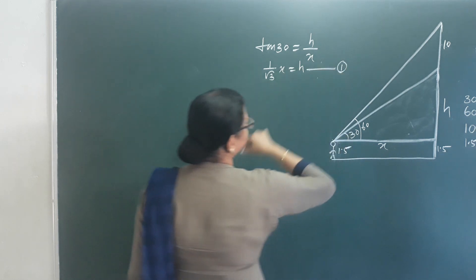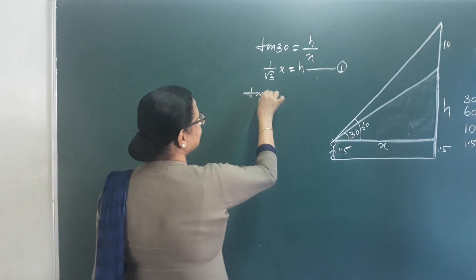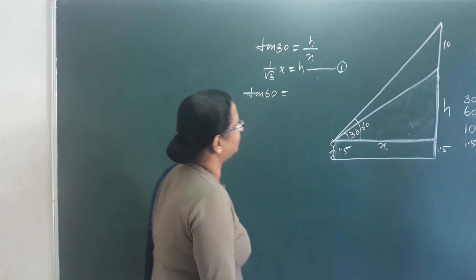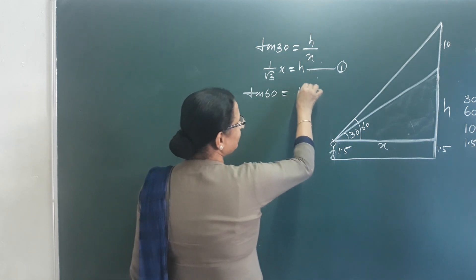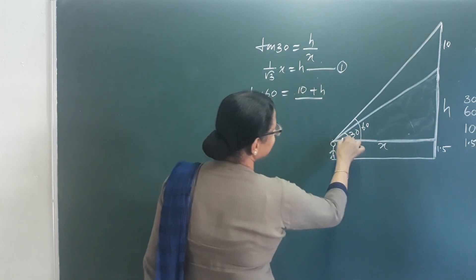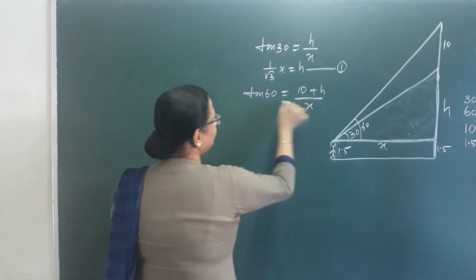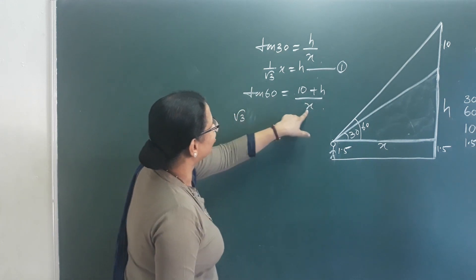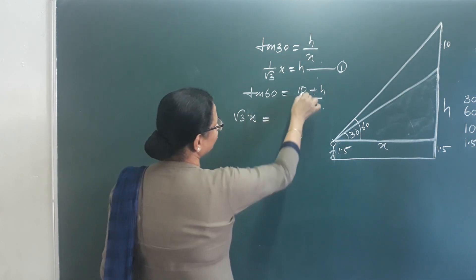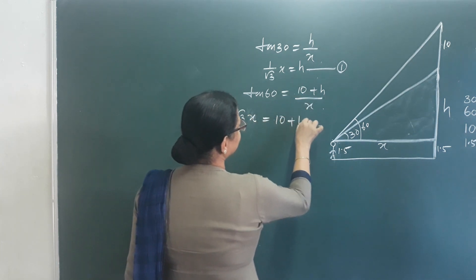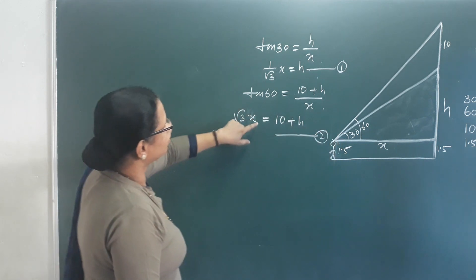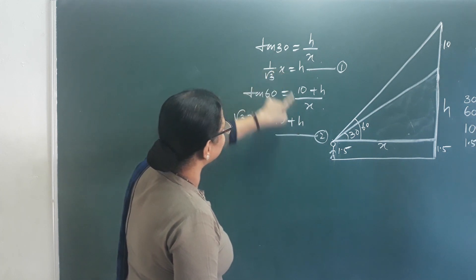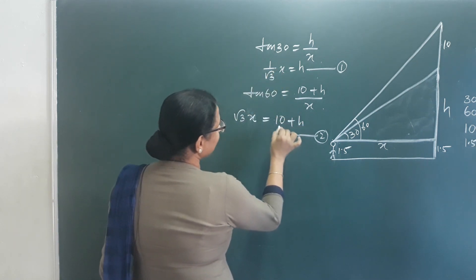Next, take tan 60. Tan 60 is equal to opposite side by adjacent side: (10 plus H) by X. Tan 60 is root 3, so root 3 times X equals (10 plus H). That is Equation 2. Now we have two equations. We can substitute Equation 1 into Equation 2.